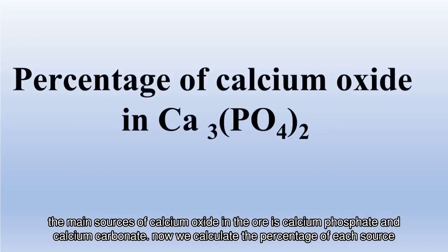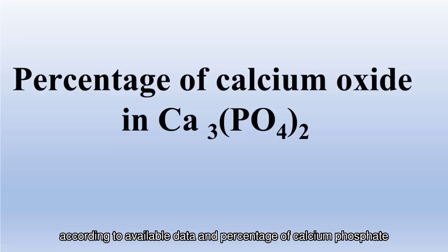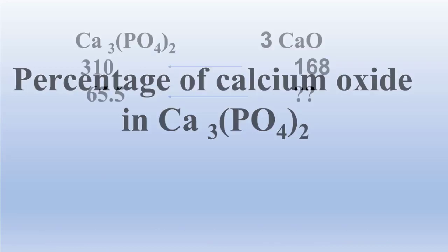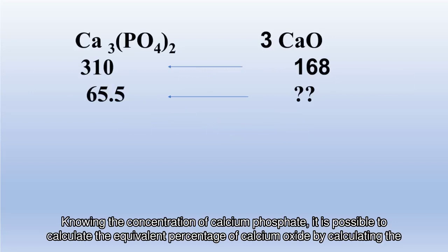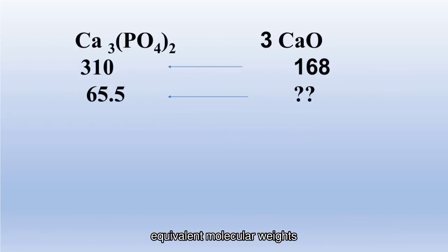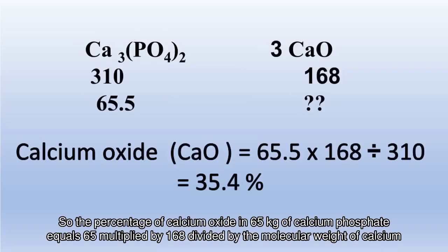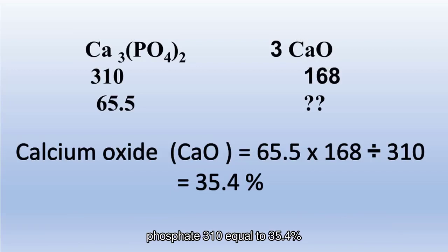The main sources of calcium oxide in the ore are calcium phosphate and calcium carbonate. We calculate the percentage of each source according to available data and the percentage of calcium phosphate. Knowing the concentration of calcium phosphate, it is possible to calculate the equivalent percentage of calcium oxide by calculating equivalent molecular weights. The percentage of calcium oxide in 65 kilograms of calcium phosphate equals 65 multiplied by 168 divided by the molecular weight of calcium phosphate (310), equal to 35.4%.